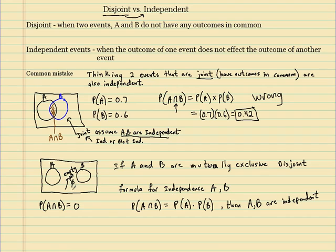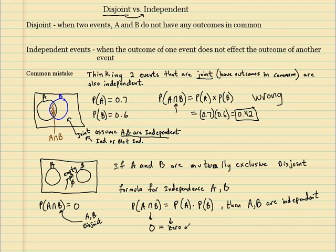If A and B are disjoint, we know P(A and B) equals zero. So for A and B to be independent, the right side — P(A) times P(B) — would also need to equal zero. If I can show mathematically that P(A) times P(B) is not zero, then A and B are not independent.